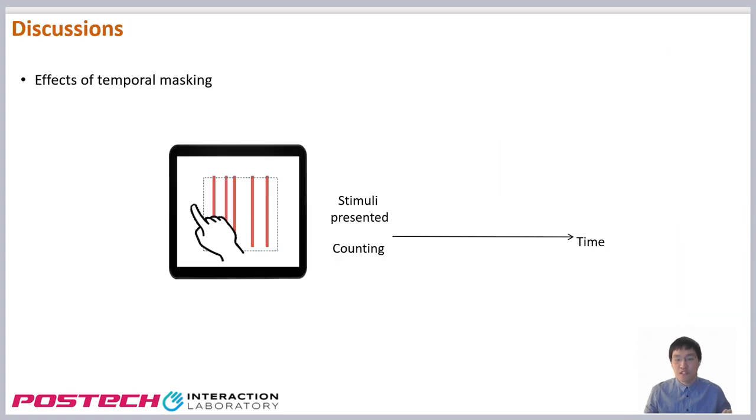The results seem to be related to temporal masking. If two or more percepts happen within a very short interval, they affect each other, causing perceptual errors.